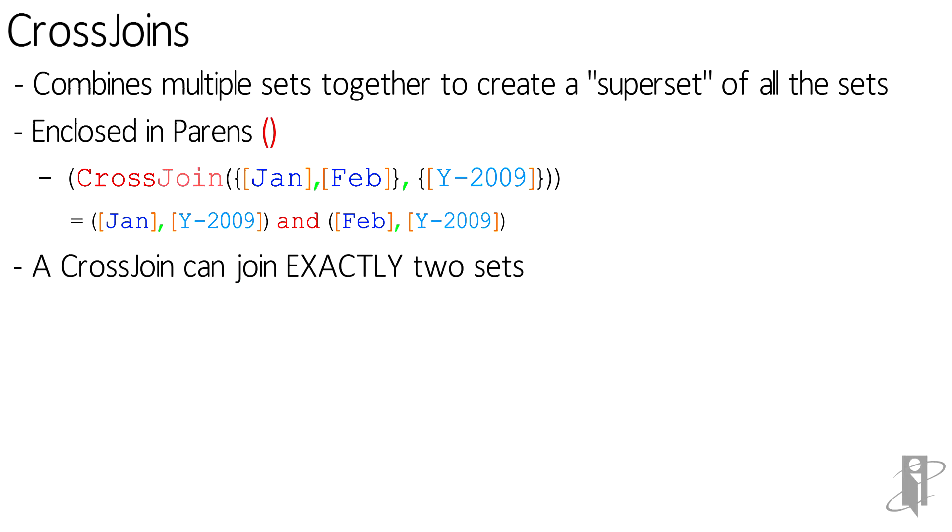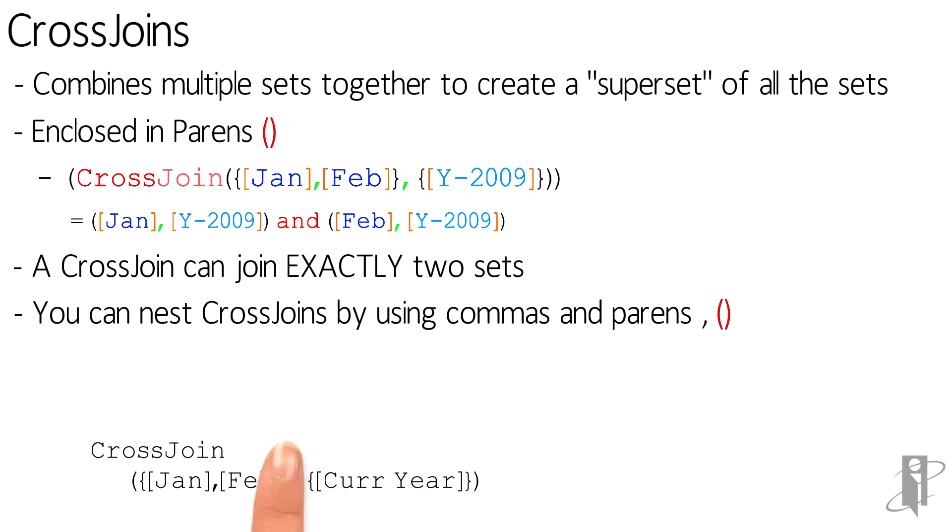A cross-join can join exactly two sets. You can nest cross-joins if you need more than two sets put together, and you would use additional commas and parentheses.